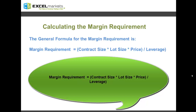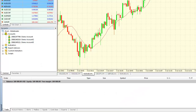Now getting down to calculating the margin requirement — in order to calculate the margin for any open trade or trade position that you have on your account, the following general formula is used: Margin requirement equals contract size times the lot size traded, that is the size for the trade position which you have opened, times the price, that is the open price at which the trade has been opened, with the product of all that divided by the leverage of your account.